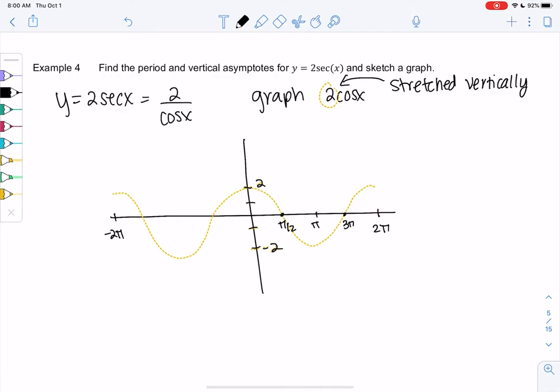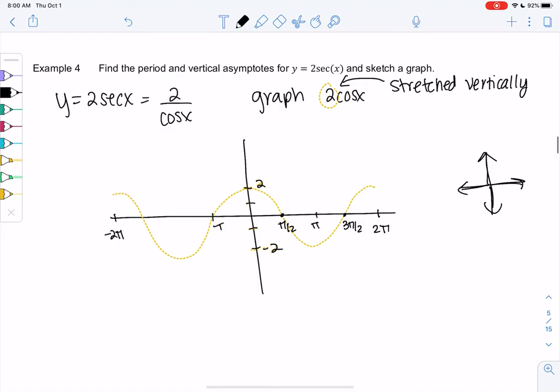Everything's related to the unit circle, so it's π/2, π, 3π/2 because those are like 0, π/2, π, 3π/2. We're just kind of going through that, so negative π/2, negative π, negative 3π/2. What we're going to do is draw asymptotes any time cosine is 0.